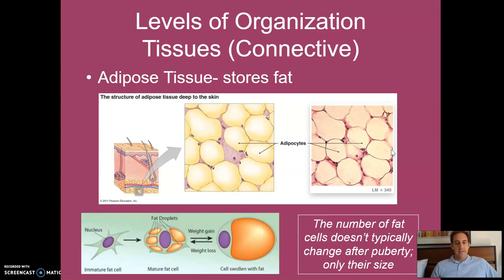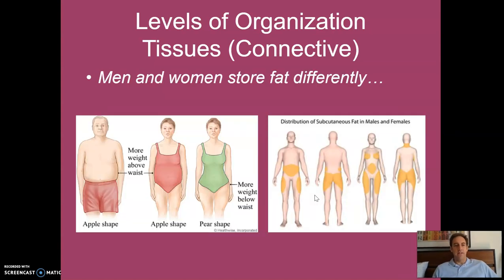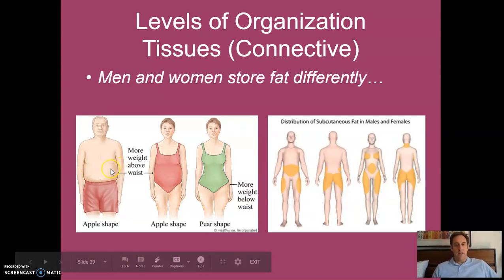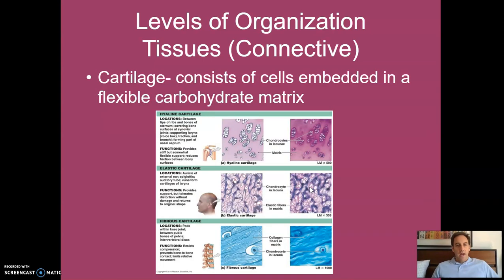Adipose tissue stores fat. An interesting fact: the number of fat cells doesn't typically change after puberty — only their size changes. Men tend to store fat more in their belly, while women tend to store it more on their hips and in the breasts.